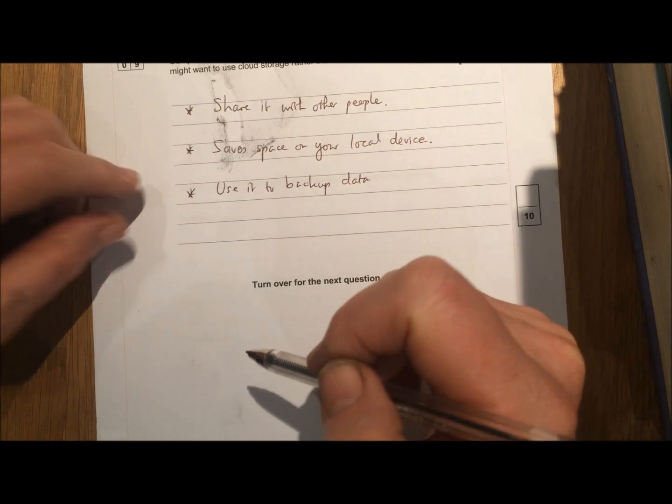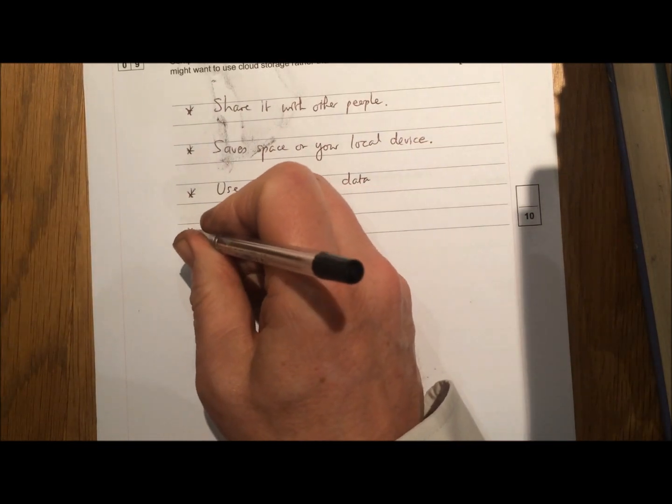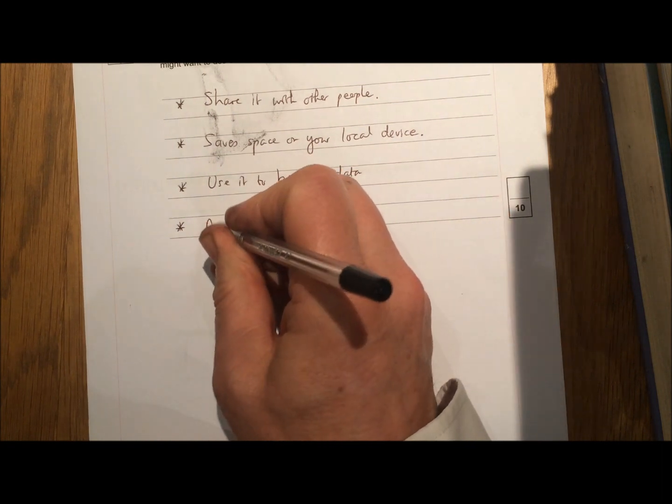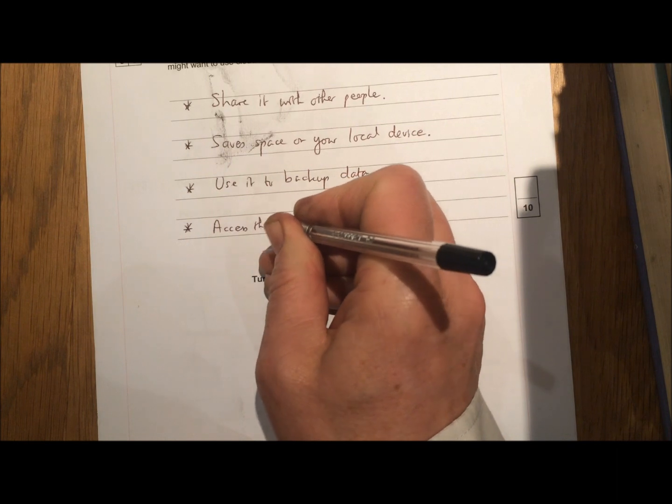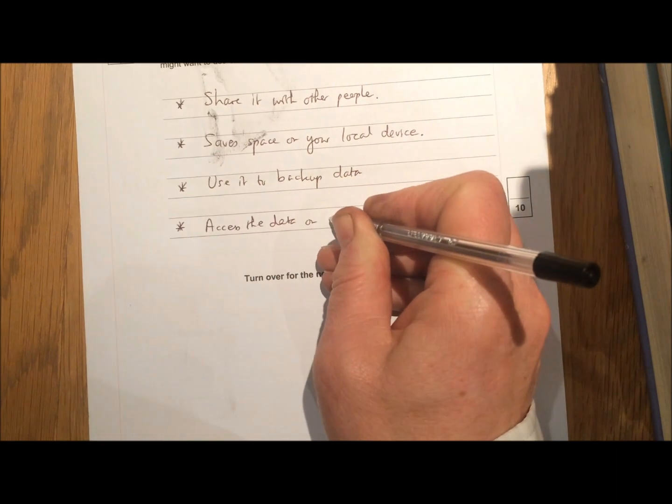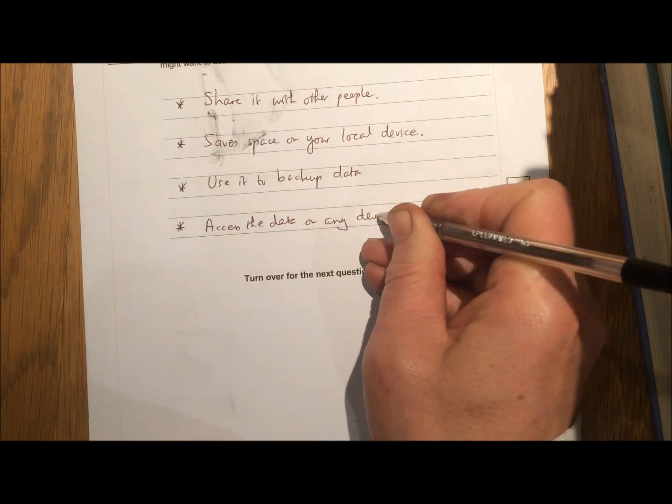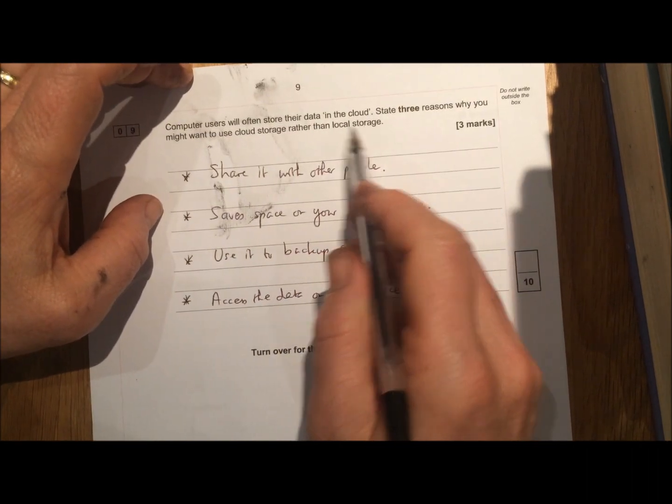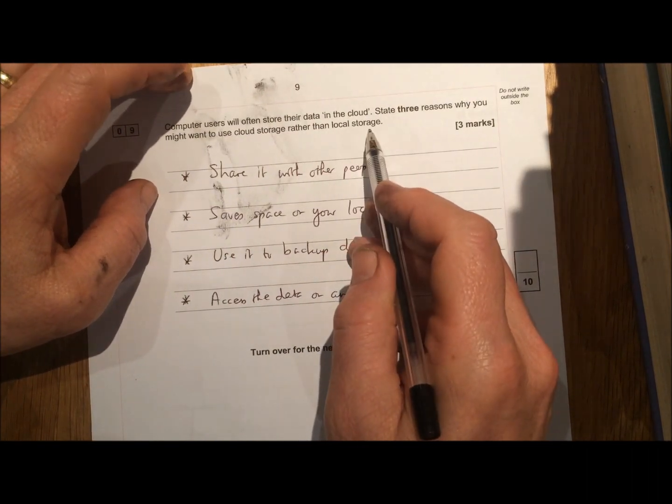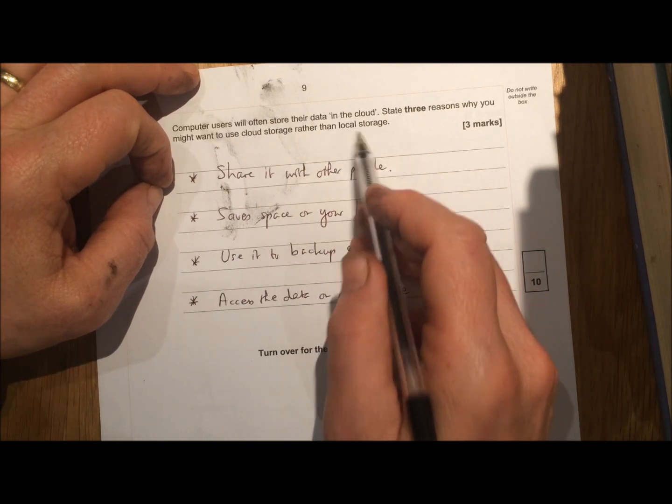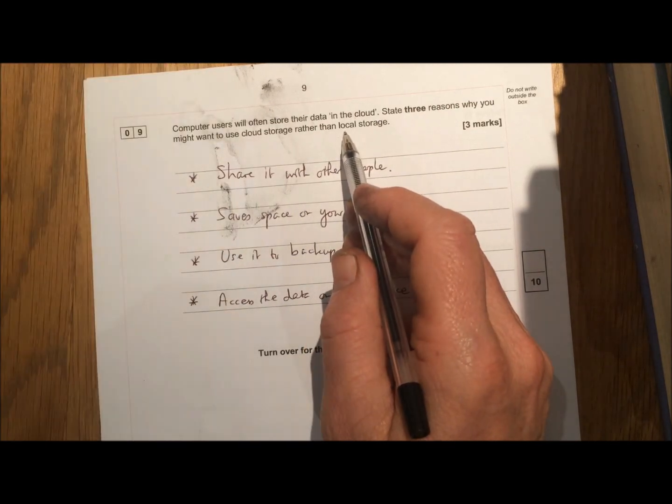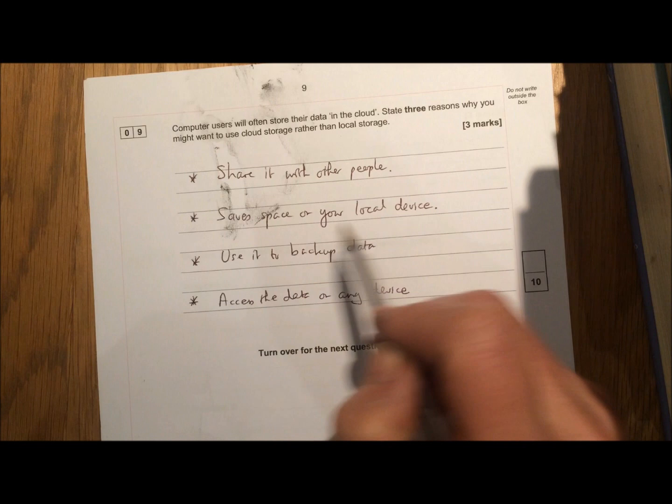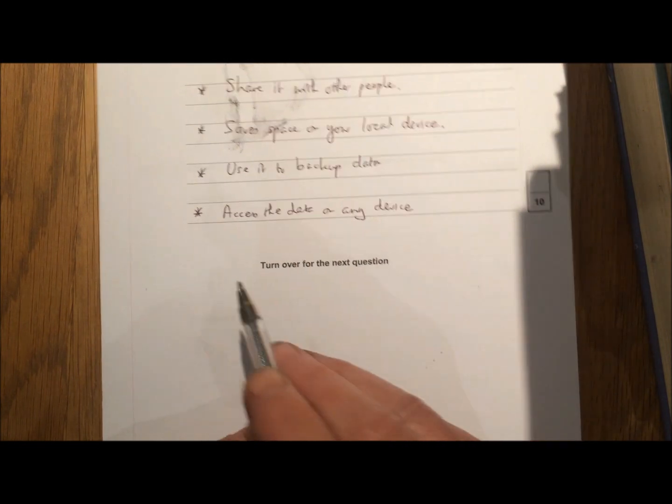And another one, bonus one here, you could talk about the fact that it means that you can access the data on any device. So if you store the data on your local device, on your local storage, then of course the only way you can access the data is by using that device. However, if you store it in the cloud, then you can log on to the cloud storage from any computer, which means you'll be able to get access to it anywhere.